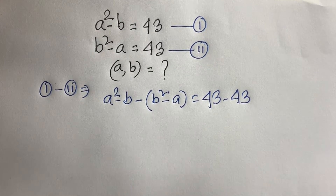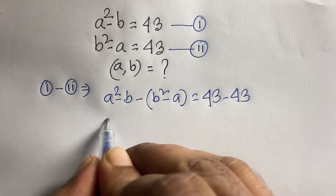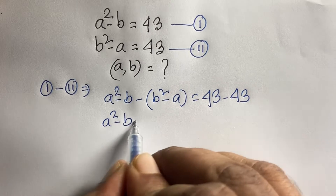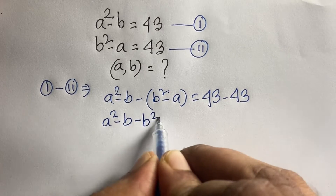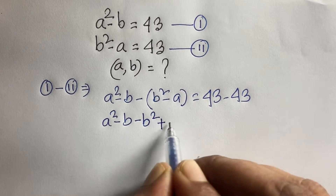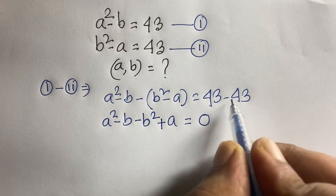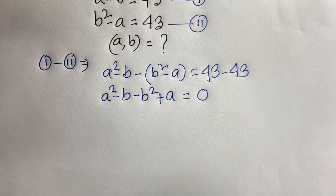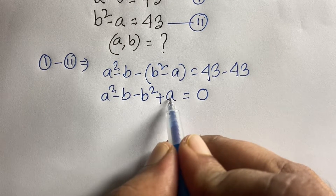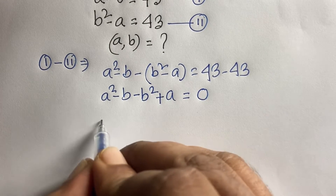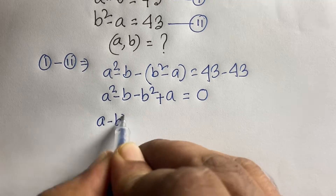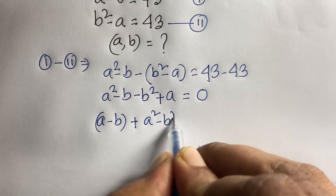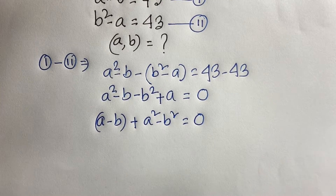This equation becomes: A squared minus B, plus minus B squared, plus A is equal to 0, because 43 minus 43 is 0. Rearranging, we get A minus B plus A squared minus B squared is equal to 0.